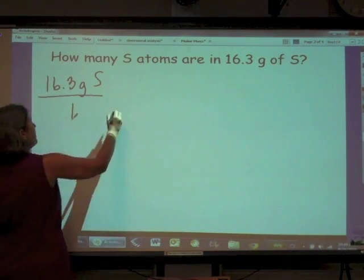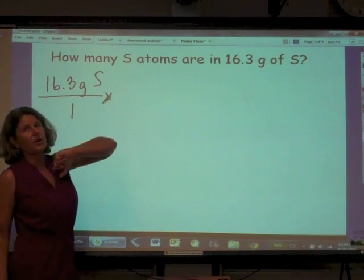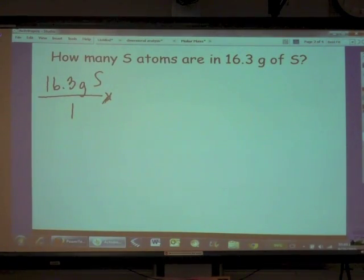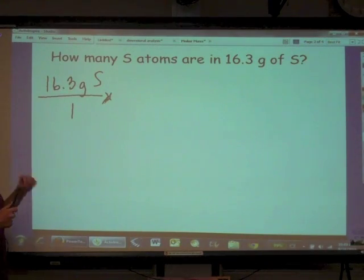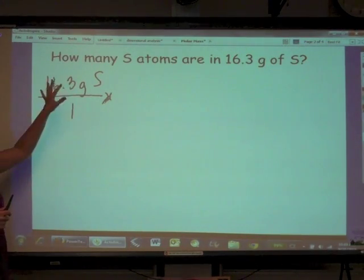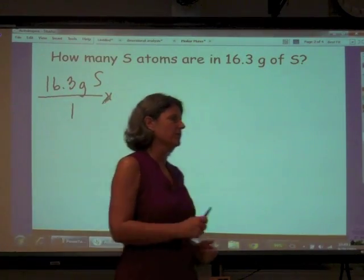The only way that we can figure out the number of atoms is for us to know the moles of atoms, because our conversion to get to number of atoms is going to be moles. Avogadro's number. So the next thing we've got to do is we've got to convert grams of sulfur into moles of sulfur, so that we know how many pieces there are in this many grams. And what are we going to use to convert that?